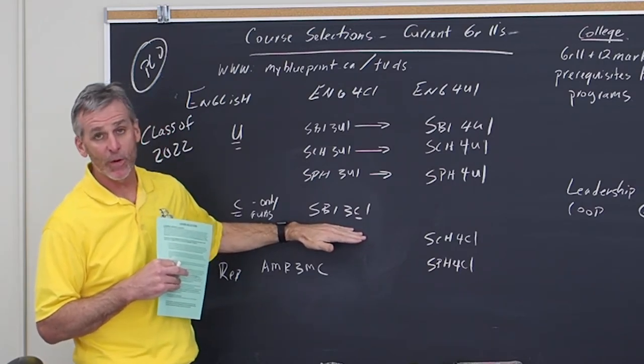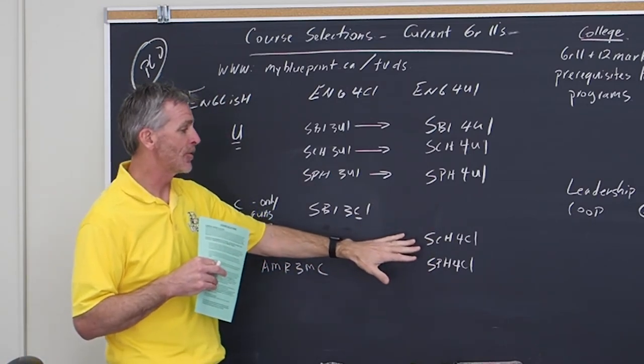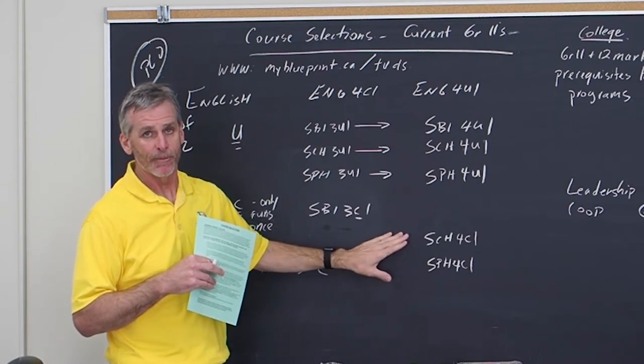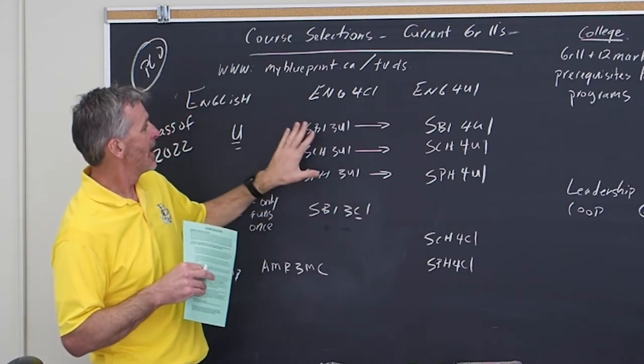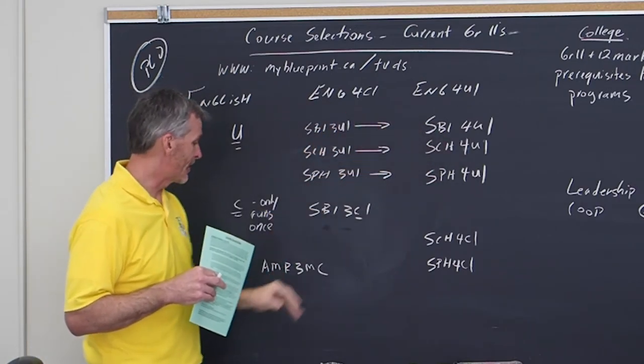And some students who are in grade 12 have already taken chemistry and physics because they were encouraged to do so in grade 11 so that those marks show up when they apply to college. But they only run once at the college level. At the university level, they run twice. So you have to have the grade 11 in order to take the grade 12.